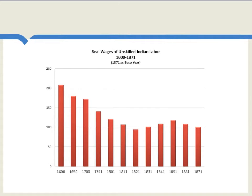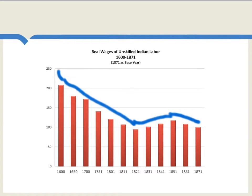If we look at wages for unskilled Indian labor, we can see that for those individuals, the decline is especially bad. Again, you can see a kind of relative peak around 1600, and then throughout the 17th and 18th centuries there is very rapid decline. In the 19th century there's a partial increase again, but by the time we get to 1871, that increase has largely petered out and the wages have gone back down again. These are many of the poorest individuals in India, and this is quite a sad story of decline.